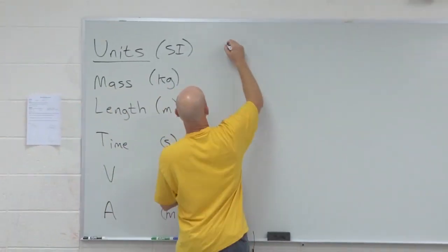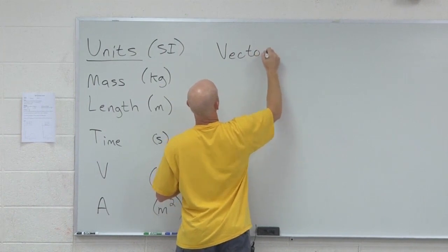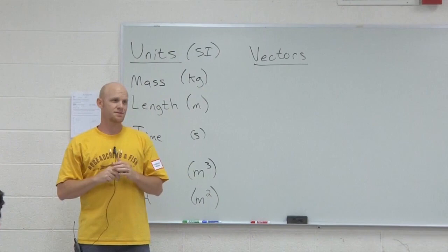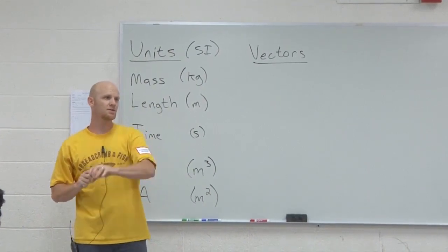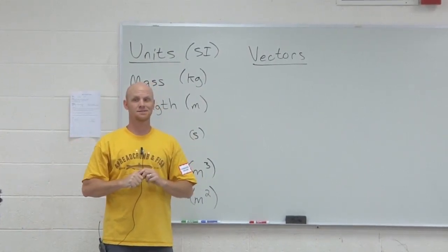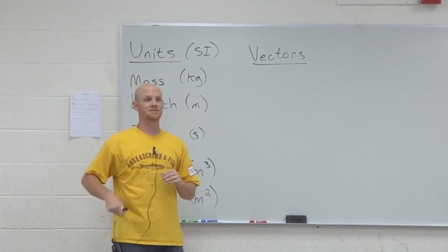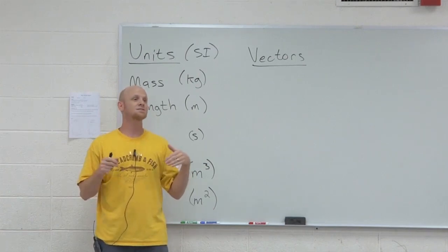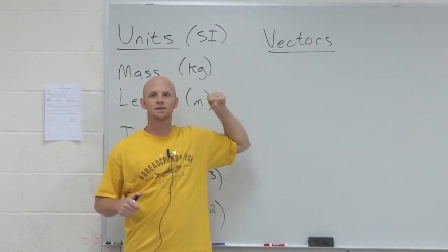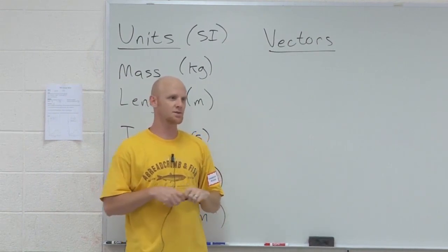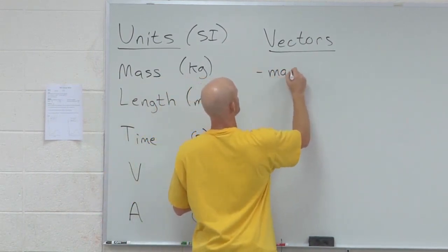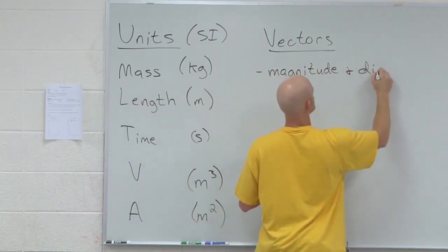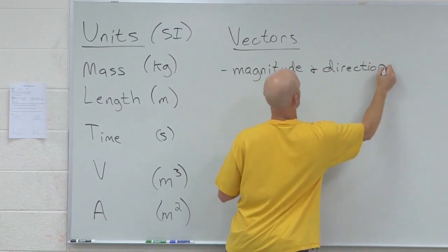Let's talk about vectors. What would I contrast a vector with? We have vectors and then we have scalars. Vectors versus scalars. A scalar is different than a vector in that a vector has direction associated with it. So a vector has both a magnitude and a direction associated with it.